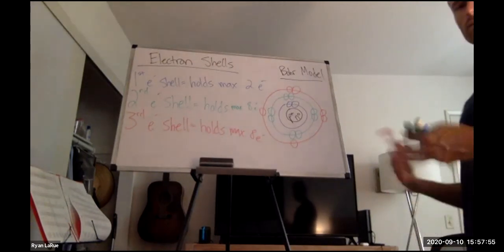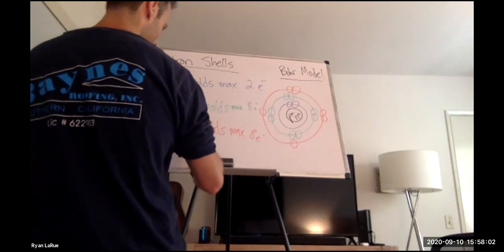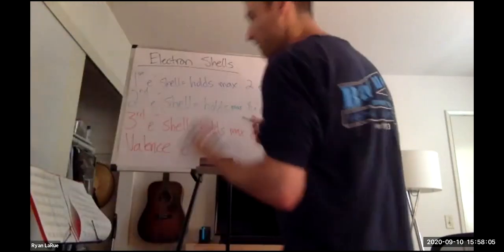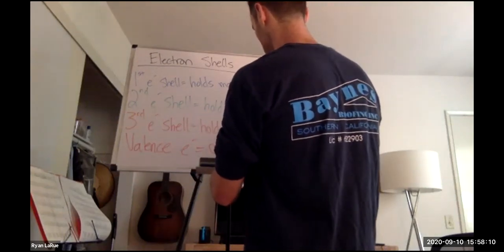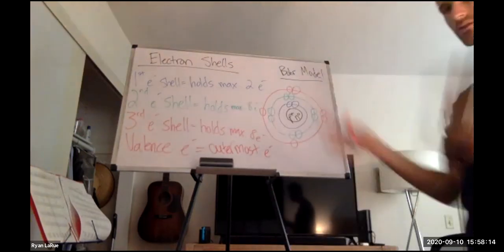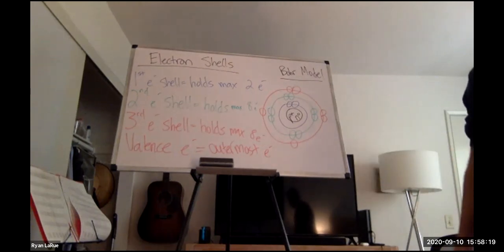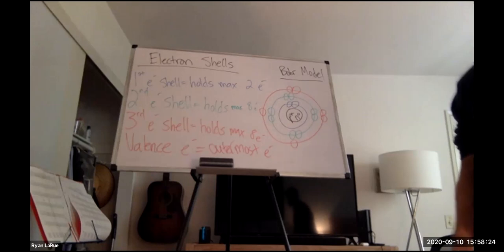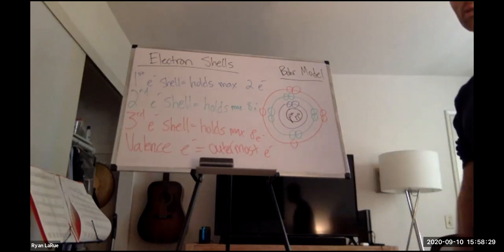I want to define a term called valence electrons. Valence electrons are our outermost electrons — the electrons in the furthest-out ring from the nucleus. Those are our valence electrons. In this atom I drew, how many valence electrons are there? Six.